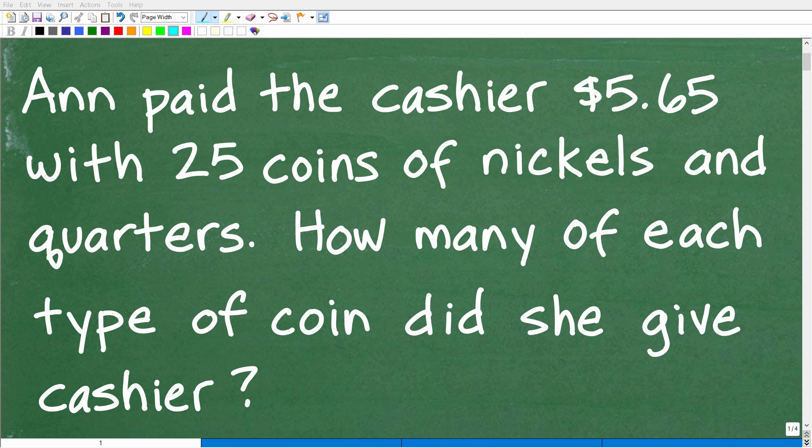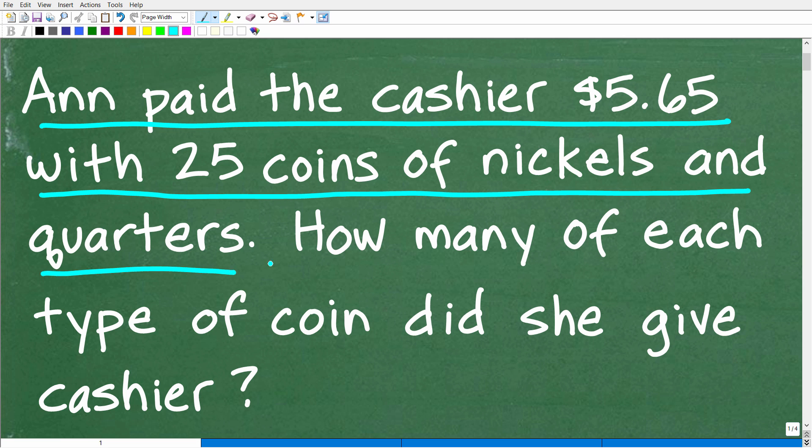Okay, so get ready to put your math skills to work to solve this interesting little math word problem. Matter of fact, let me go ahead and read the problem. It is the following: Ann paid the cashier $5.65 with 25 coins of nickels and quarters. How many of each type of coin did she give the cashier?